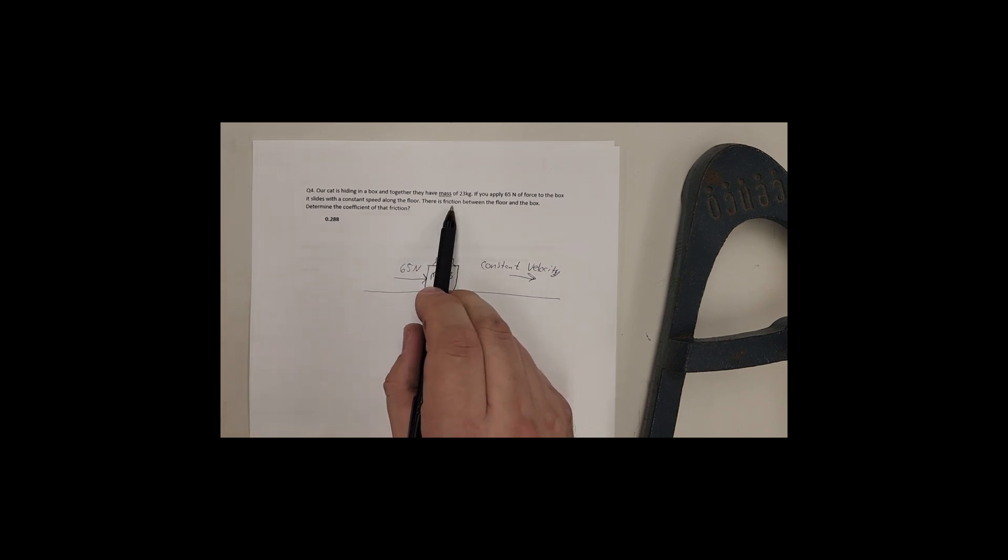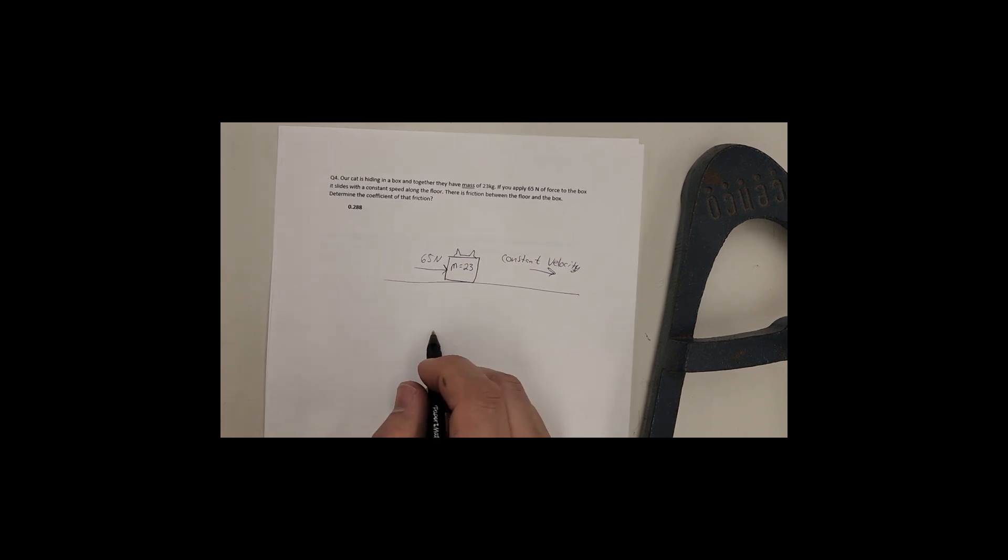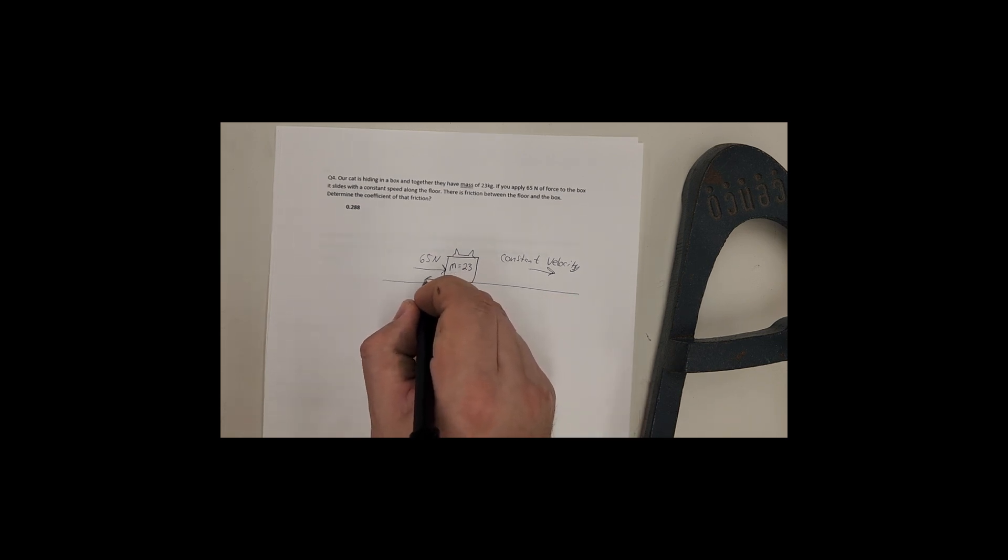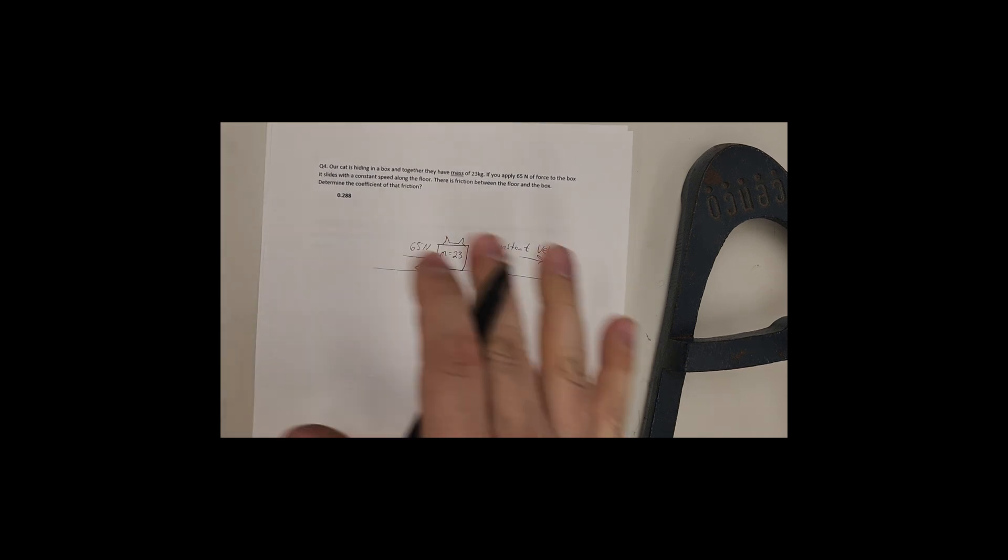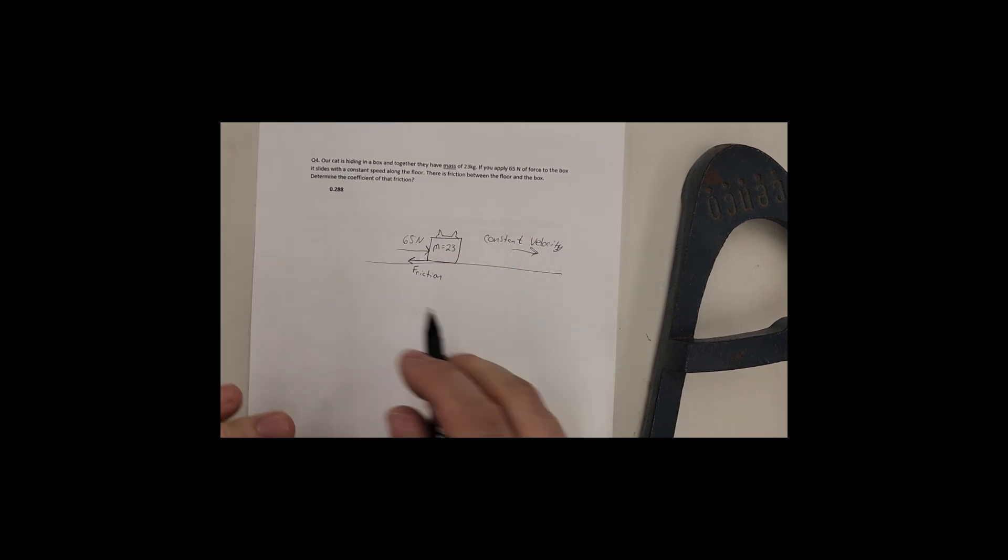There is some friction, so friction will always oppose the motion. If the box is being pushed this way, friction will always oppose the motion of the box. I need to determine that coefficient. I know that the coefficient of friction is buried inside of the friction formula for friction force.